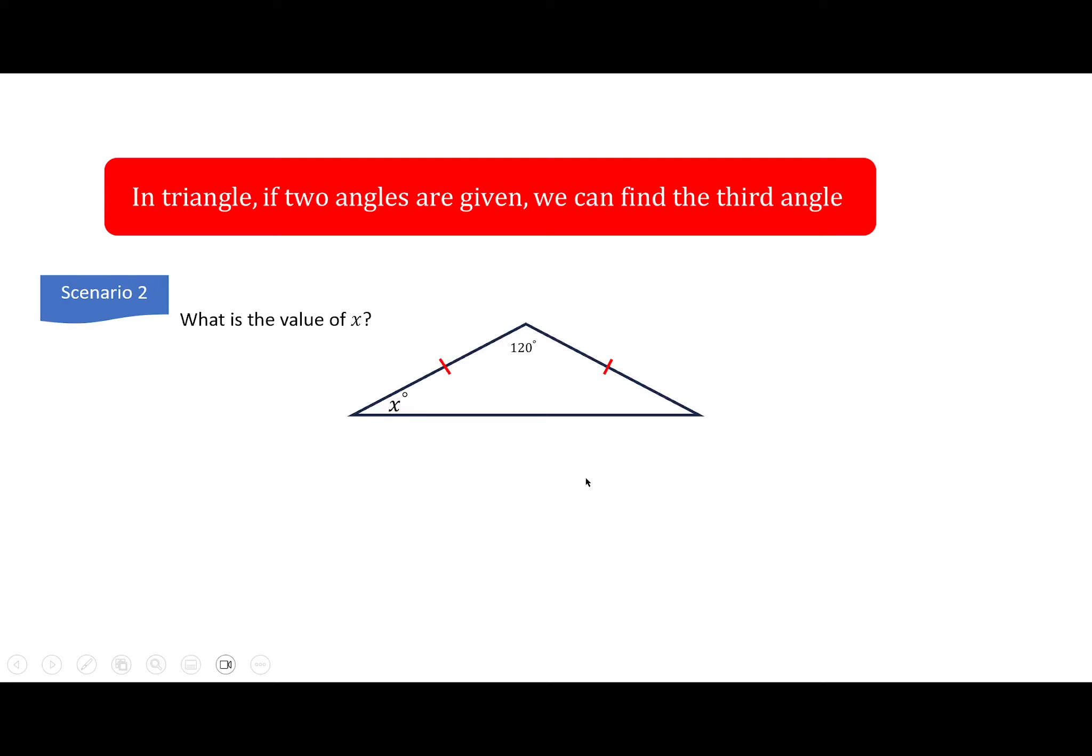Here's scenario number two. What is the value of x? This is 120, and you might say, wait a minute, I only have the measurement of one angle. How can I solve the problem? See, since you have the tick marks here and here, that means this triangle is isosceles. These two sides are equal, then these two angles are equal. So whether they tell you or not, you just go ahead and put x here too. Then you have x plus x plus 120 is 180. 2x plus 120 is 180. Subtract 120. 2x is 60. x is 30. So this is 30 and this is 30. Check your work: 30 plus 30 plus 120 equals 180.